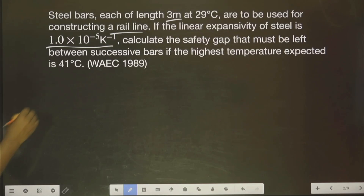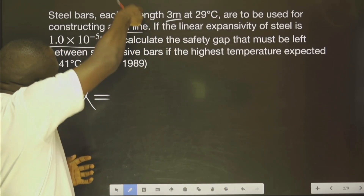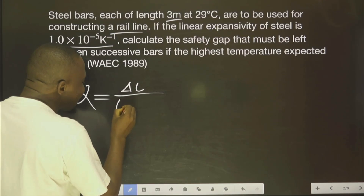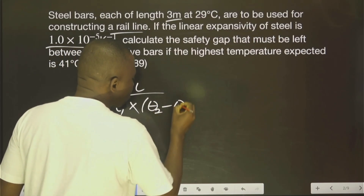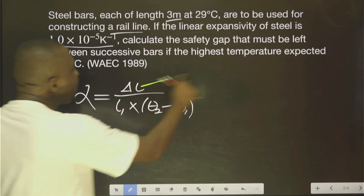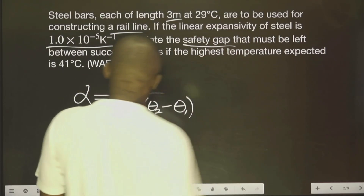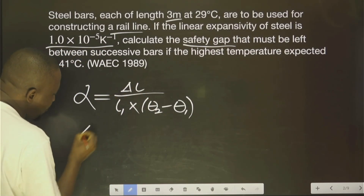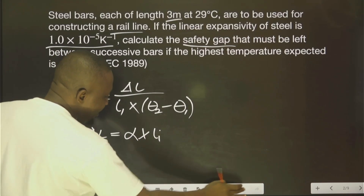The formula says linear expansivity is equal to the rise in length — the increase you experience when heated — that is, change in length over the original length multiplied by change in temperature. That is, the new temperature minus the former temperature. Change in length is simply L2 minus L1, the new length minus the old length. The gap to be given is this change in length. All we need to do is make change in length the subject of the formula: ΔL = α × L₁ × ΔT.